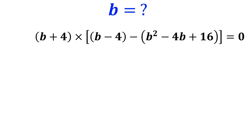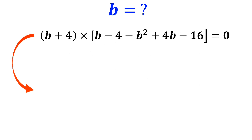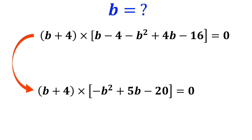Now we simplify the expression inside the brackets, and it becomes b plus 4 times b minus 4 minus b squared plus 4b minus 16, which simplifies further to b plus 4 times negative b squared plus 5b minus 20, is equal to 0.